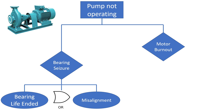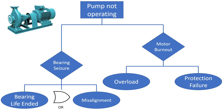Considering the other failure mode, motor burnout, it can be caused by overload of the motor and failure of motor protection like a circuit breaker. A circuit breaker's function is to save the motor from drawing excessive current and burning out. Neither overload nor protection failure alone can cause motor burnout, because overload will trip the motor circuit breaker and save the motor from burning out. Therefore, the relation between these two events is represented by the AND gate — the motor will have to be overloaded and the protection will have to fail to cause a motor burnout.